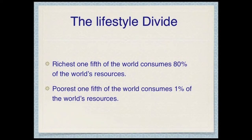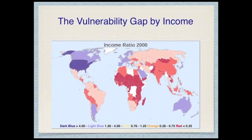The third divide is the lifestyle divide. The richest one-fifth of the world is consuming 80% of the world's resources, while the poorest one-fifth consumes only 1% of the world's resources. This creates a vulnerability gap by income. The dark blue nations have over four times the median global income; light blue, one and a quarter to four times; pink is average at three-quarters to one and a quarter; orange, only a quarter to three-quarters; and red, less than one quarter. You can see how this is distributed by regions around the world.